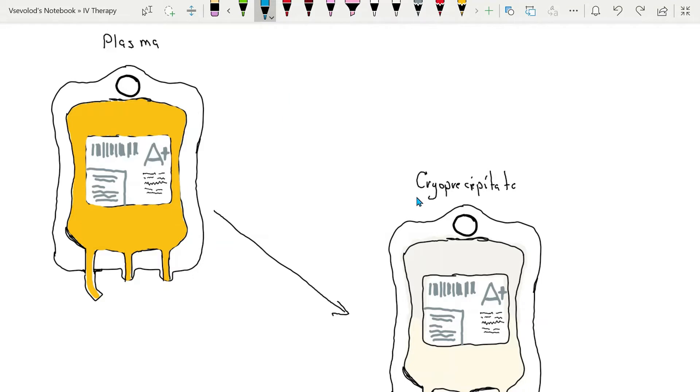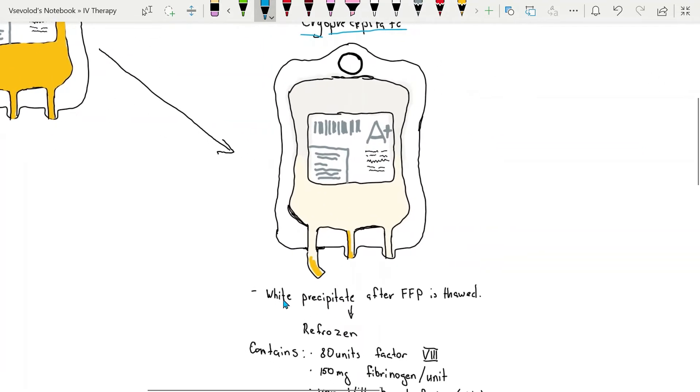Hello, in this video we're going to review cryoprecipitate. Cryoprecipitate is prepared from fresh frozen plasma and is the insoluble portion of plasma that remains as a white precipitate after fresh frozen plasma is thawed at 4 degrees Celsius under special conditions. The cold insoluble precipitate is then refrozen.